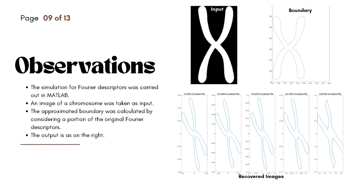This is the result of performing a simulation of Fourier descriptors in MATLAB. As input we consider a black and white image of a chromosome. Using the BWBoundaries function, we obtain the boundary points of the chromosome shape, seen in the second image. We calculate the Fourier transform of these boundary points to obtain the Fourier descriptors. The image is then recreated by considering a particular number of Fourier descriptors. There are five images: the first uses 4.3% of the initial Fourier descriptors, the second 3.4%, the third 2.6%, the next 1.7%, and the last only 0.8726% — yet the image still vaguely resembles the initial image, showing it is an approximation.